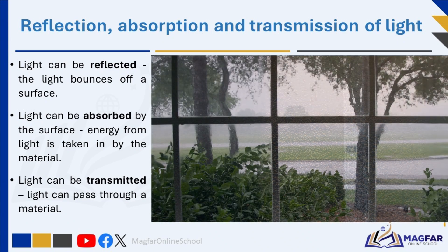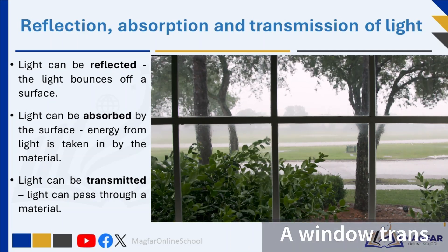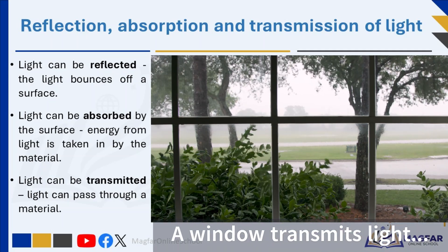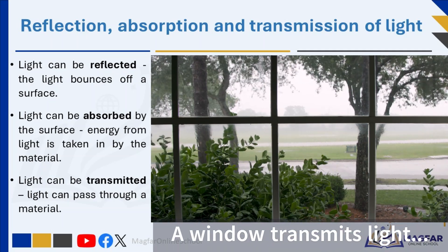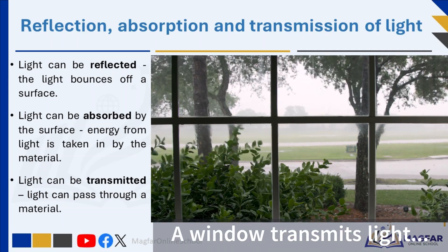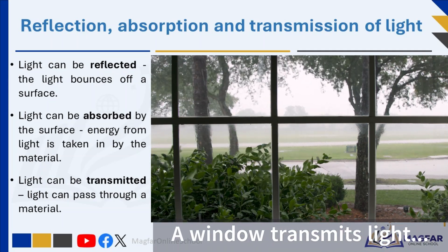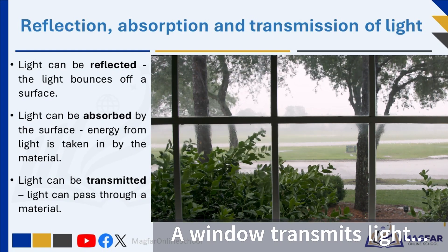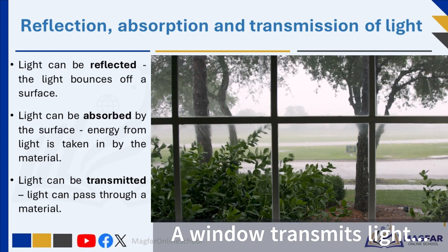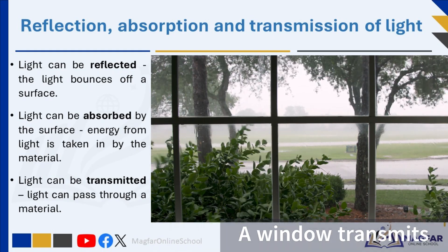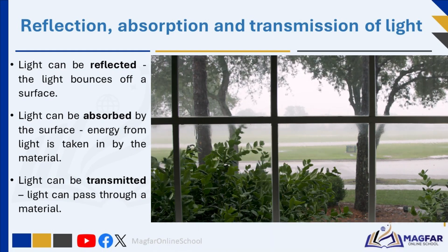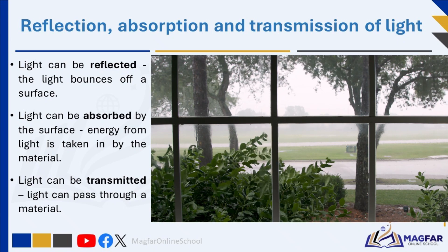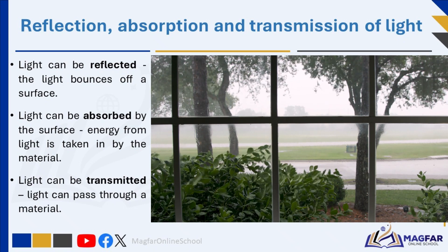Finally, light can be transmitted, which means it passes through the material. For example, when light hits glass, some of it is reflected, but most of it goes through, allowing us to see through windows and view objects on the other side.